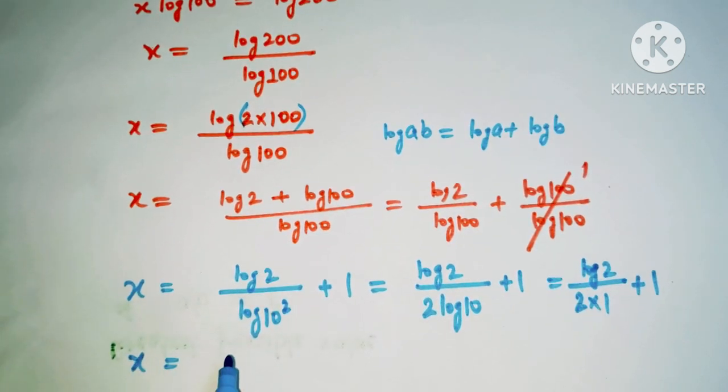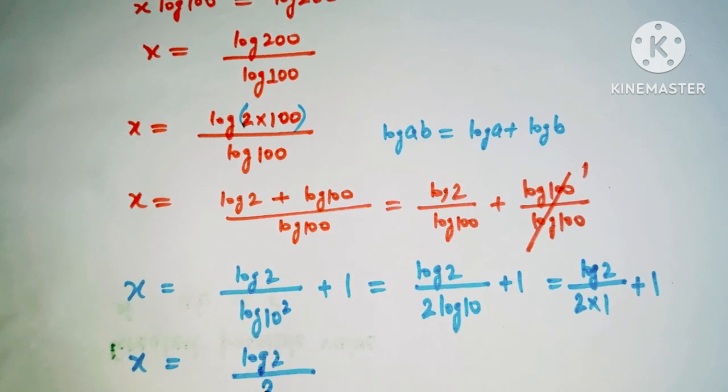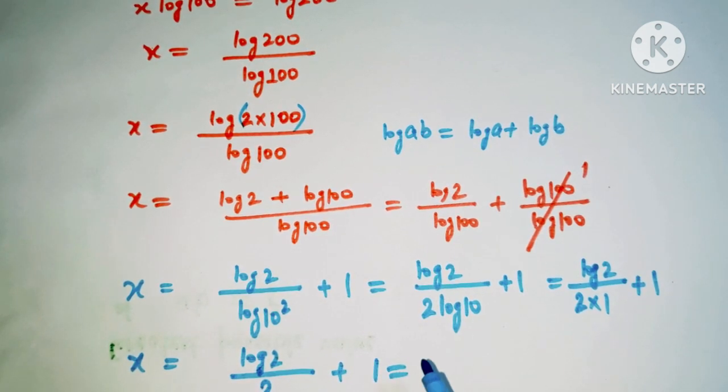So x equals log 2 divided by 2 plus 1. And log 2 value is 0.301.